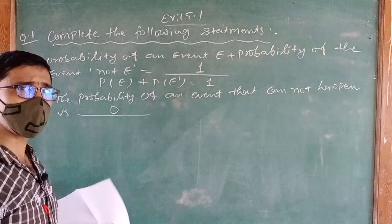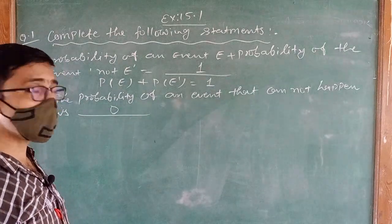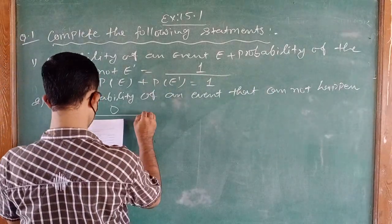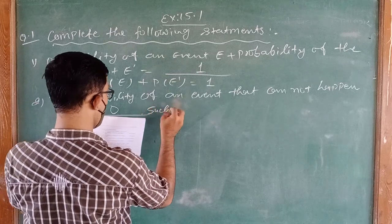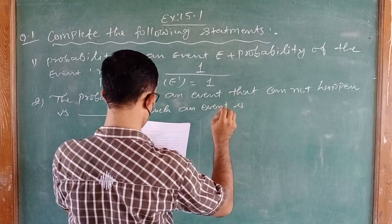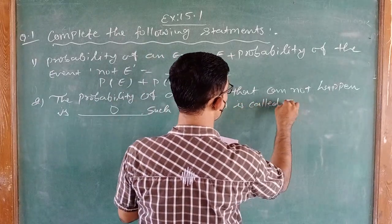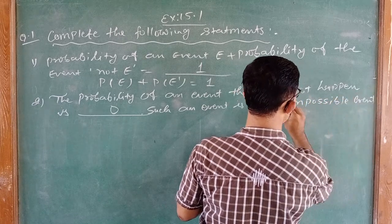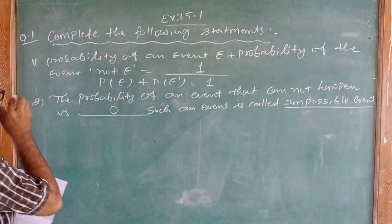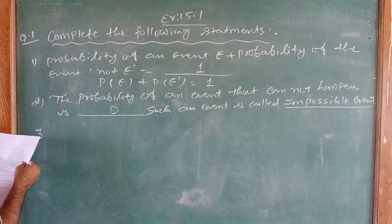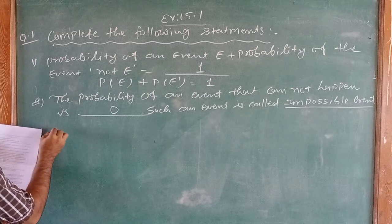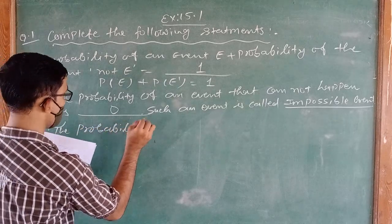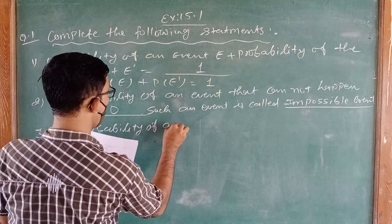The probability of an event that cannot happen is 0. For example, the sun rises in the west — that is impossible. Such an event is called an impossible event.